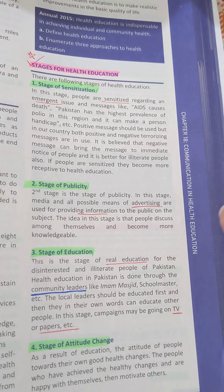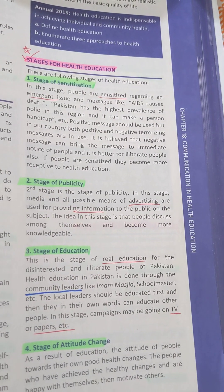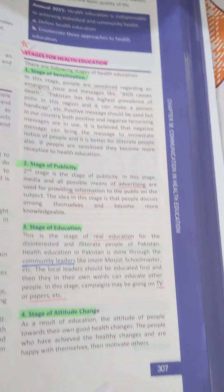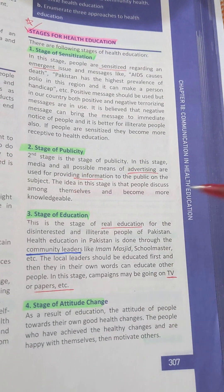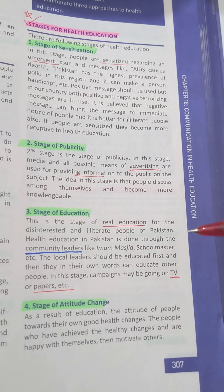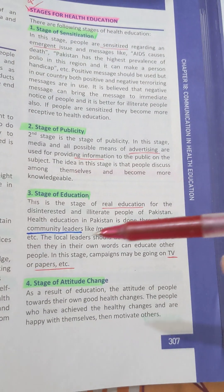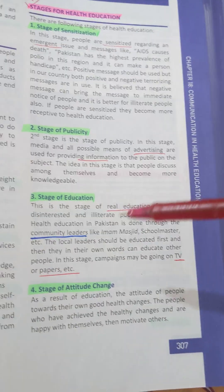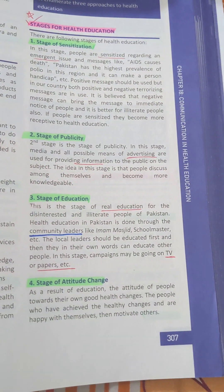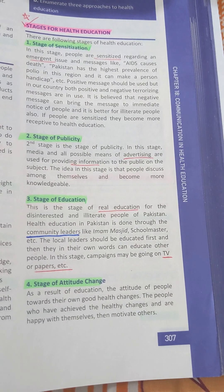Stage three is the stage of real education, especially for the disinterested and illiterate people of Pakistan. Health education in Pakistan is done through community leaders like Imams at Masjids and school masters. The local leaders should be educated first, and then they can educate other people in their own words. In this stage, campaigns may also run on TV or in newspapers. Doctors for a particular specialty or disease can also educate others.